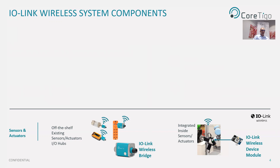The second option, as you can see here, is to embed and integrate an IO-Link Wireless module inside a sensor or actuator. The modules include the IO-Link Wireless stack and the physical radio components. In this example, you can see an IO-Link Wireless module — like this printed circuit board over here at the bottom — embedded inside an end effector on a collaborative robot.